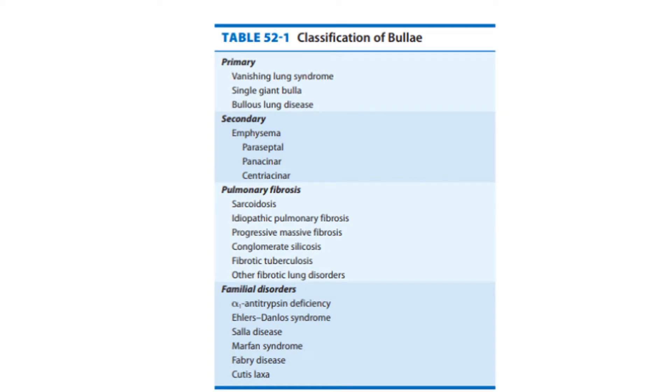How do we classify bullae? It can be classified into primary and secondary. Under primary, it includes the vanishing lung syndrome, single giant bullae, and bullous lung diseases.